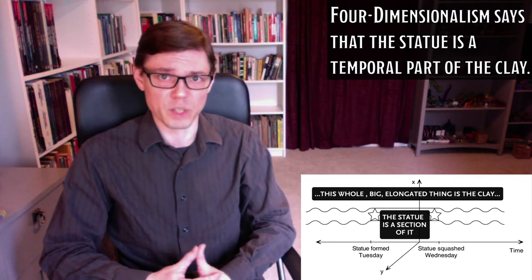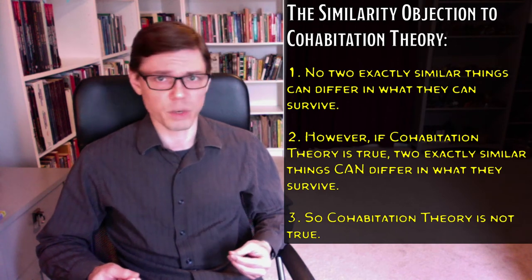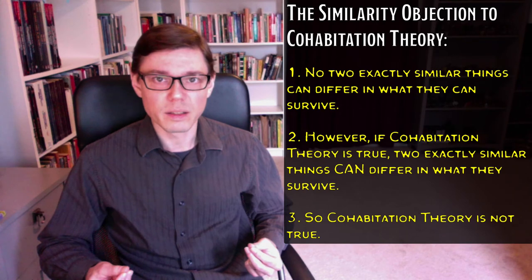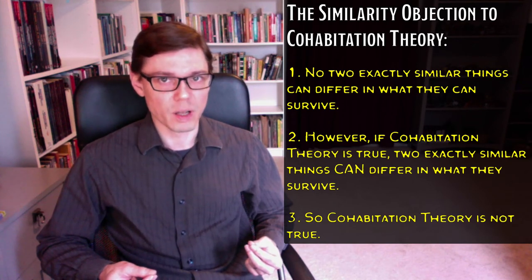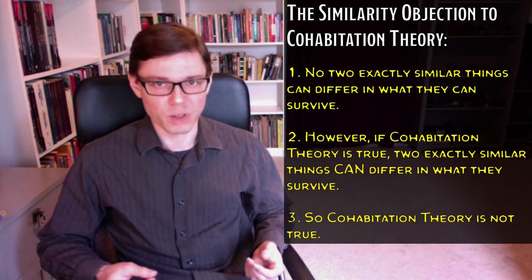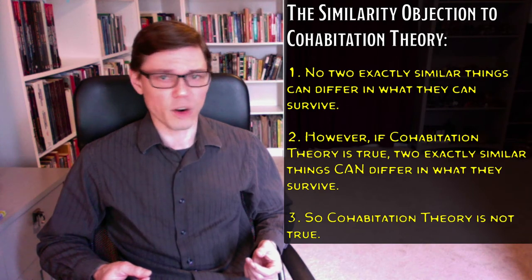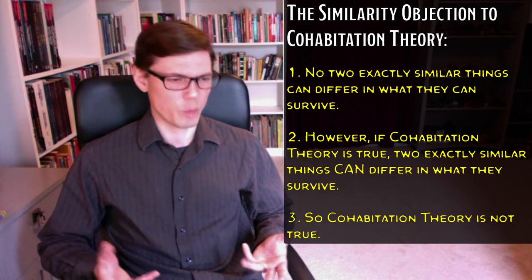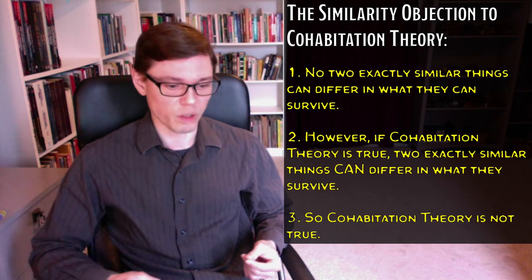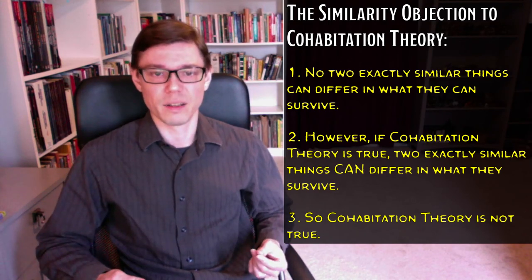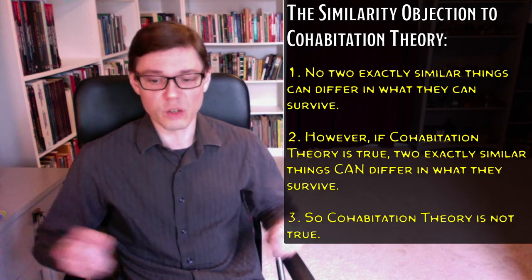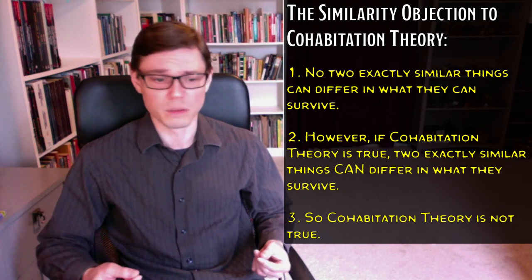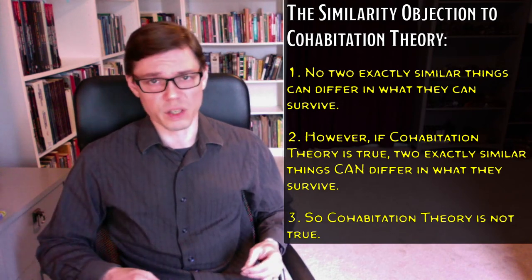That's how the four-dimensionalist solves the puzzle of material constitution. When we look at the similarity objection to cohabitation theory from the previous lecture, we can see how the four-dimensionalist avoids it. The cohabitation theorist was troubled by the issue that you can have two things that are exactly similar but which differ in what they can undergo and survive — that seemed absurd. According to the cohabitation theorist, the statue and lump of clay are as alike as can be, but only one can survive being squished. The four-dimensionalist can solve this: according to four-dimensionalism, the statue and the lump of clay are not exactly alike. The clay is stretched out and exists in places and times where the statue does not. Since they're not exactly similar, there's no absurdity in a difference in what they can undergo and what their persistence conditions are.